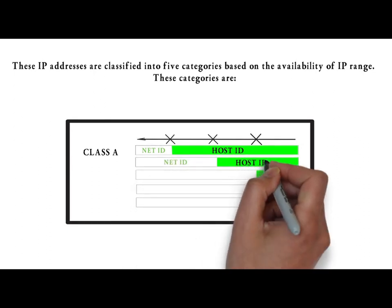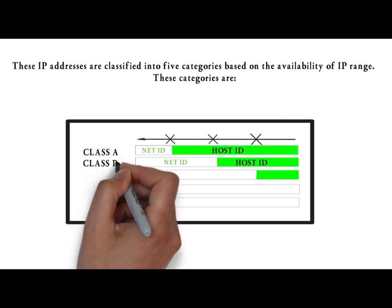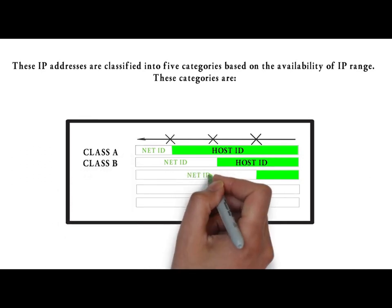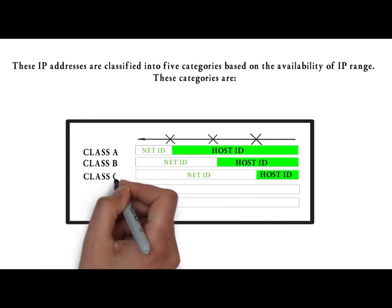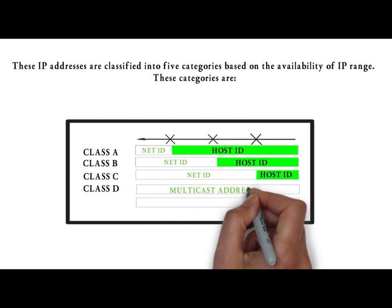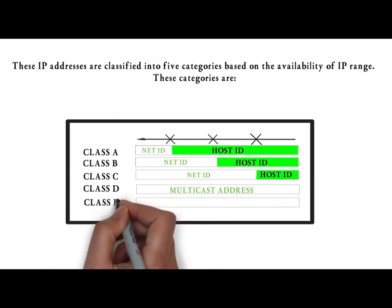The class C was created for the numerous networks with the small number of hosts. These IP addresses are classified into 5 categories based on the availability of IP range. These categories are class A, B, C, D and E.